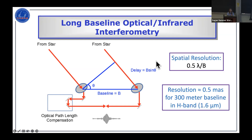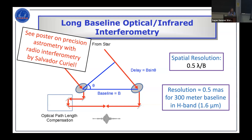The big advantage of interferometry is that the spatial resolution depends on the separation or baseline between your two telescopes. For a 300-meter baseline working in the H band at 1.6 microns, you get roughly half a milli-arc-second resolution. Going down to visible wavelengths, you can extend down to about 0.2 milli-arc-seconds. My talk focuses on optical and near-infrared interferometry; there's also a nice poster by Salvador on precision astrometry with radio interferometry.